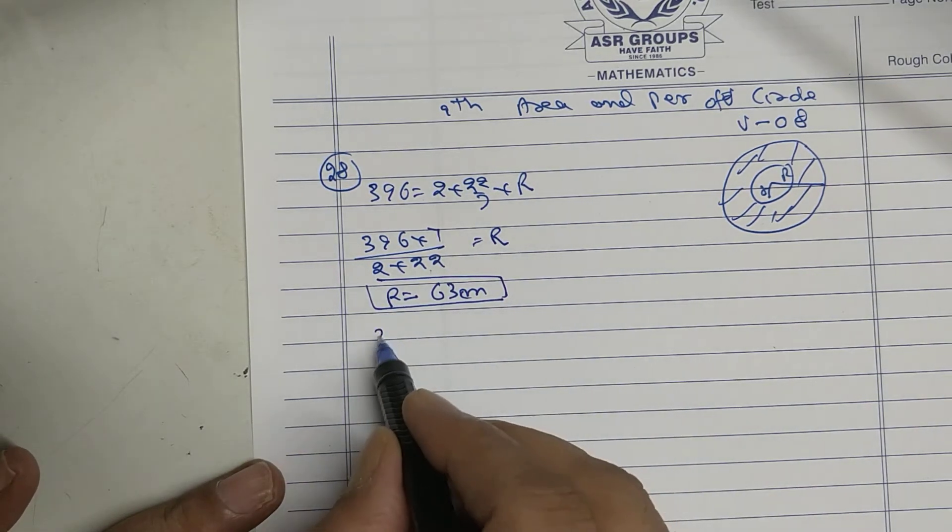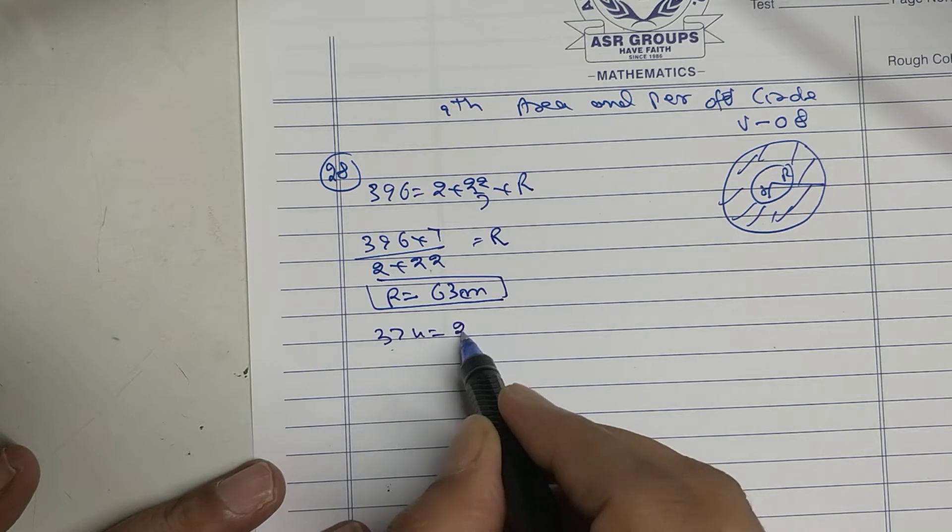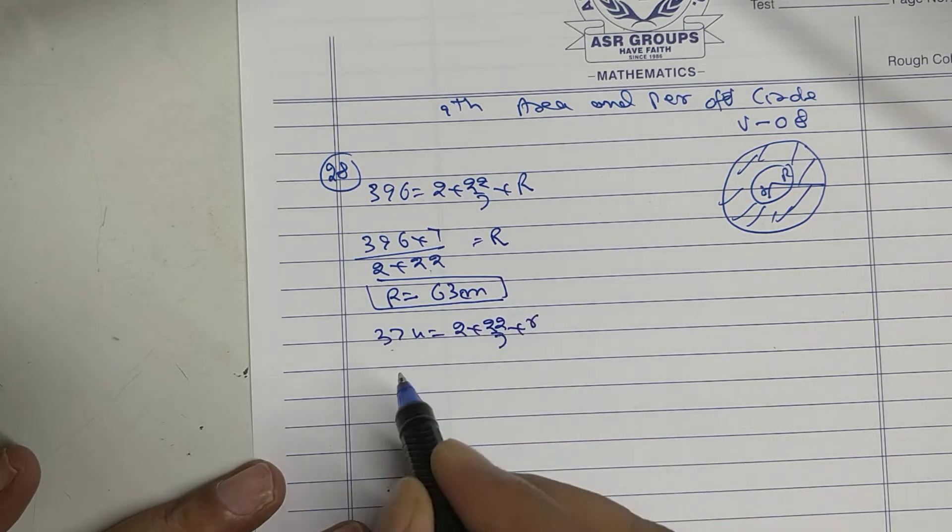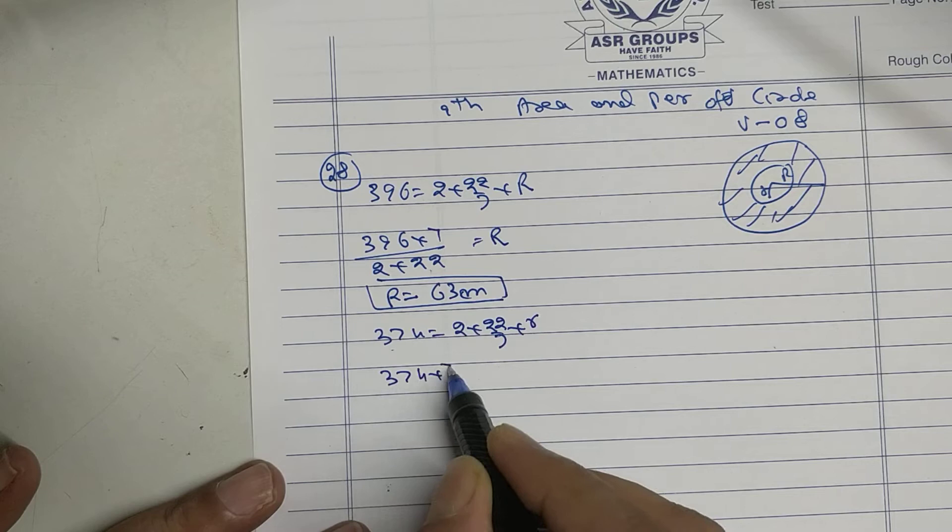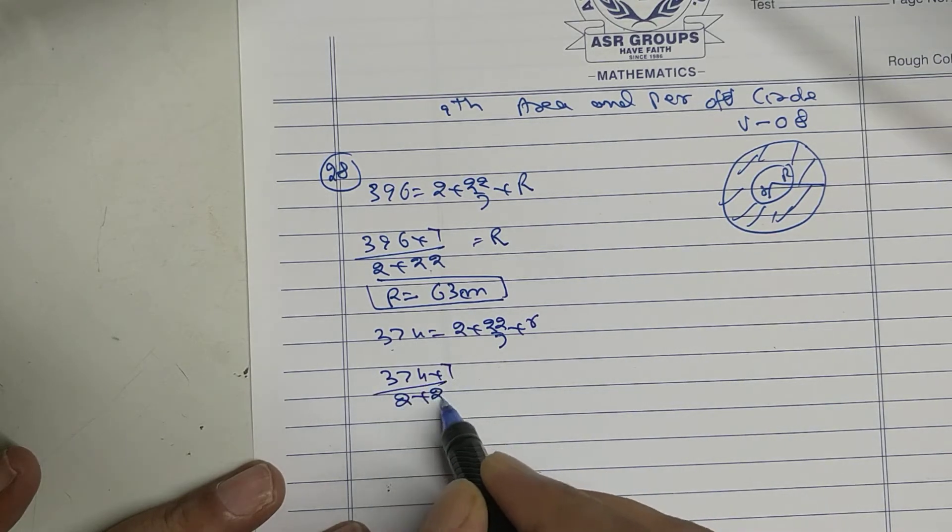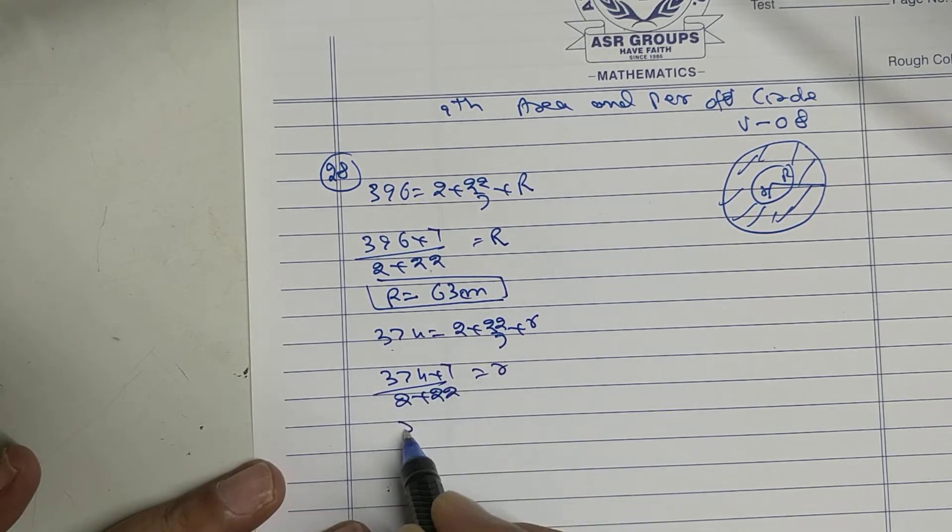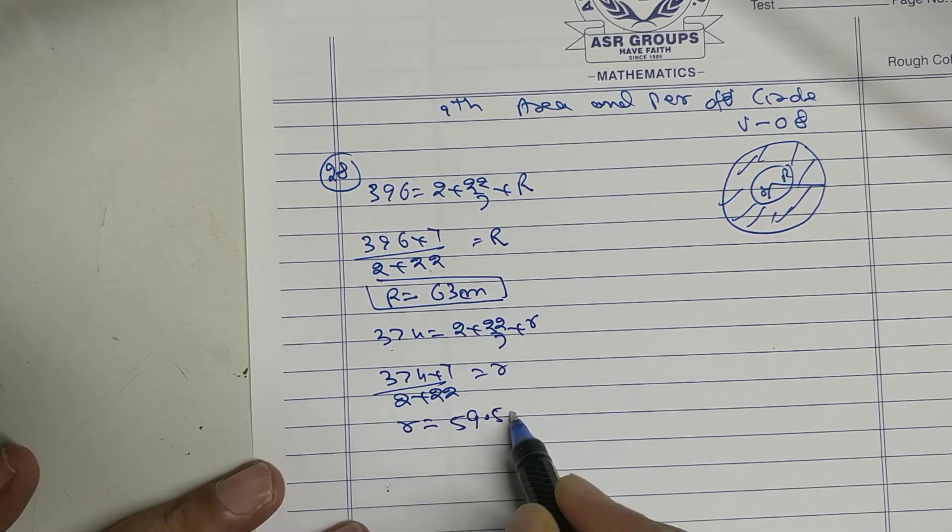374 equal to 2 into 22 upon 7 into small r. 374 into 7. So r equal to 59.5 centimeter.